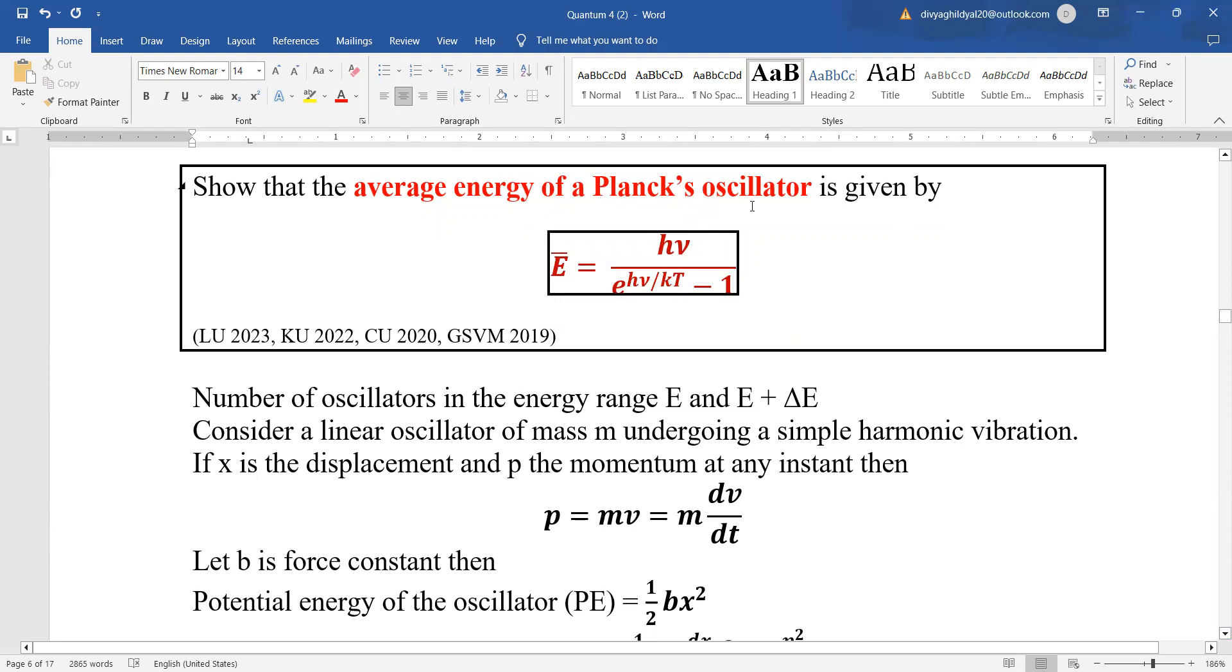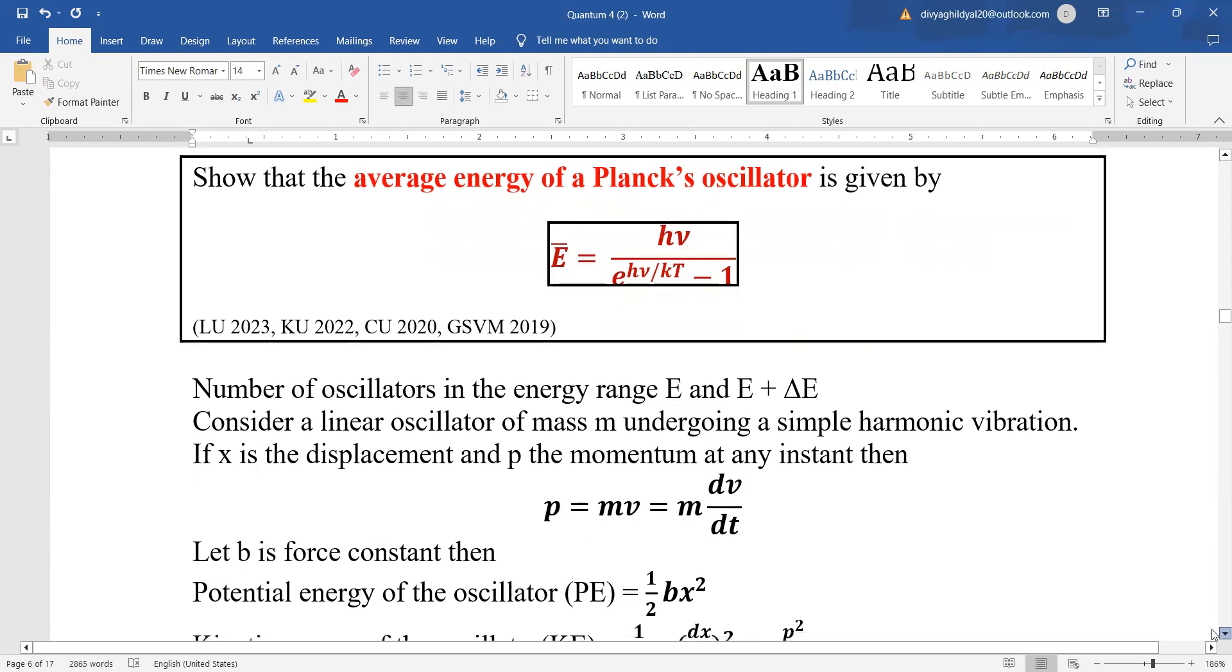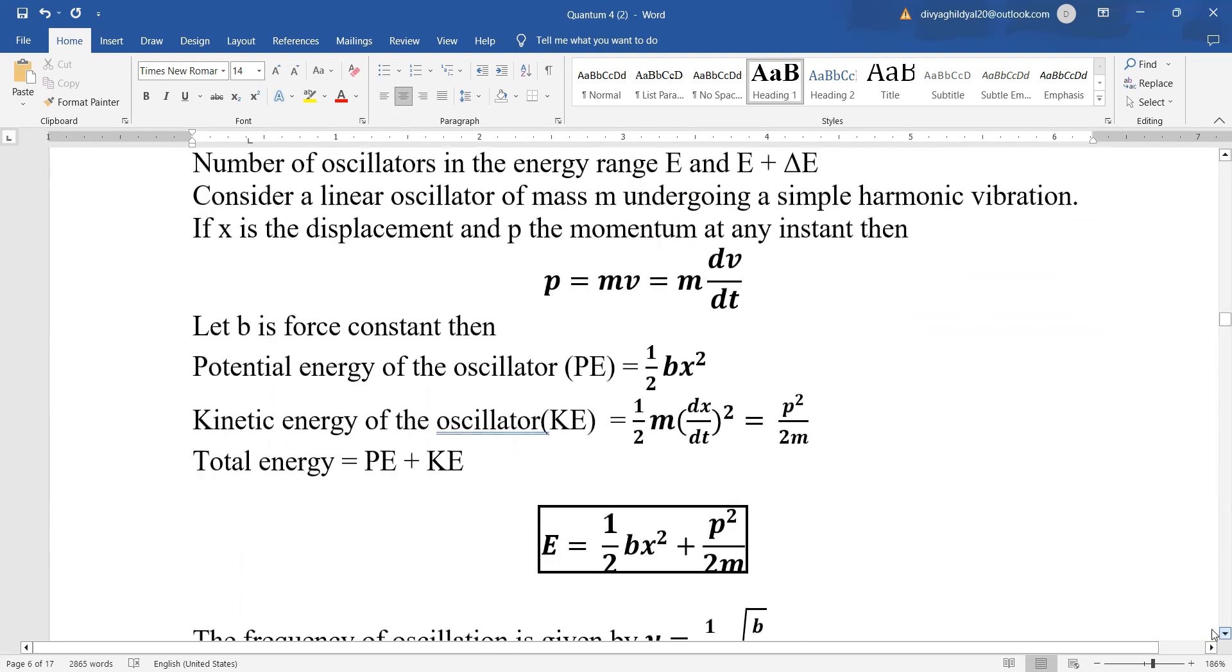Now we have to find the average energy of a Planck's oscillator. Number of oscillators in the range E and E plus dE, we will only consider that much. Now, for a linear oscillator of mass m undergoing simple harmonic oscillation or vibration its momentum is given by mass into velocity or you can say mass into rate of change of velocity. Now, let b be the force constant.